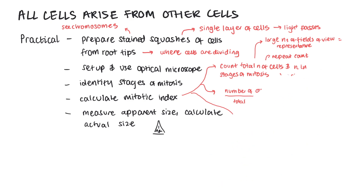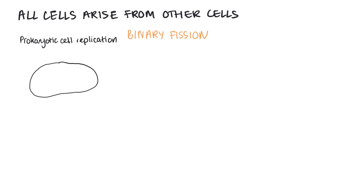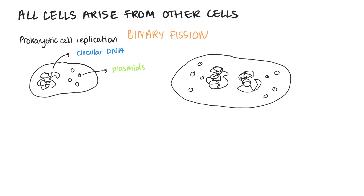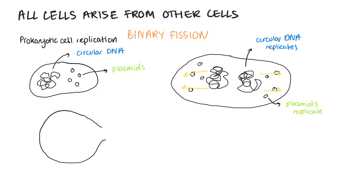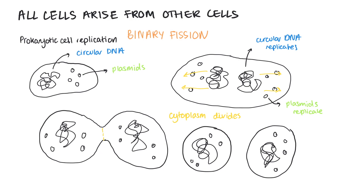Now, prokaryotic cells — for example, bacteria — replicate by a process called binary fission. This is not the same as mitosis; they don't undergo a cell cycle. Prokaryotic cells have circular DNA and might have small accessory DNA parts called plasmids. Their circular DNA replicates, the plasmids replicate, the cytoplasm expands, and each DNA molecule moves to opposite poles of the cell. The cytoplasm then divides, leaving two daughter cells each with a single copy of DNA and a variable number of plasmids.